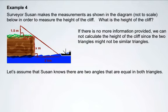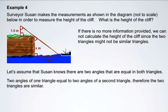At this point, let's assume that Susan knows that there are two triangles and that there are two angles in each triangle that are equal. So we have a right angle here and a right angle here, and same values for these angles there and there. So since two angles of one triangle are equal to two angles of a second triangle, we can conclude that these two triangles that she's dealing with are similar triangles.